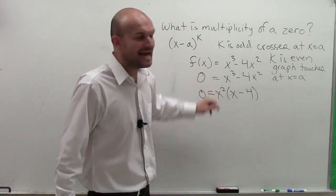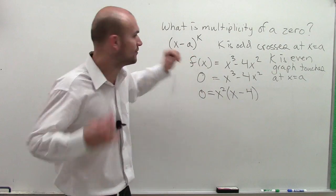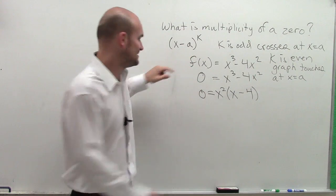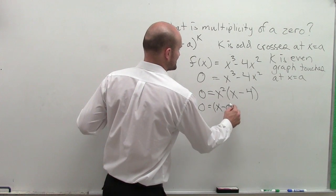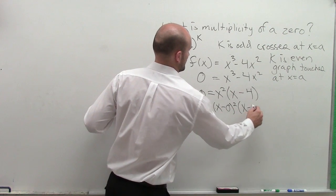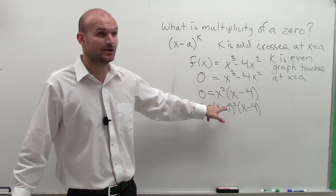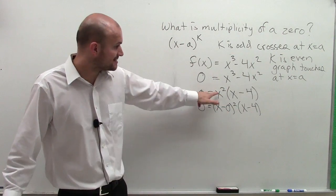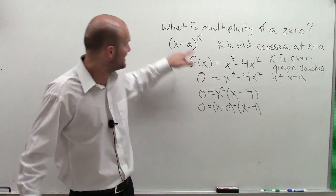Now this x² doesn't look like it's in that form, right? So how could I write x² in that form? Well, very simply, a is going to be zero. I'll write it out: (x - 0)². This is the same thing as x², it's just x minus zero, which we know is x. But now I've written it in this form: 0 = (x - 0)²(x - 4).